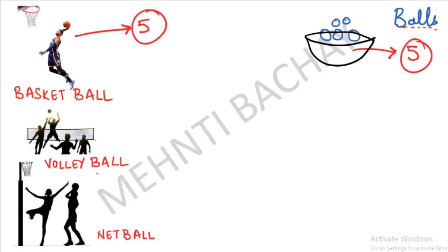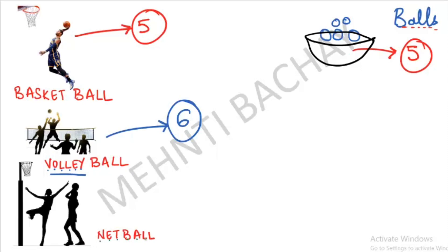For Volleyball, look at the spelling — it has 6 letters: V, O, L, L, E, Y. So Volleyball has 6 players. Next is Netball — the spelling has 7 letters: N, E, T, B, A, L, L. So Netball has 7 players.